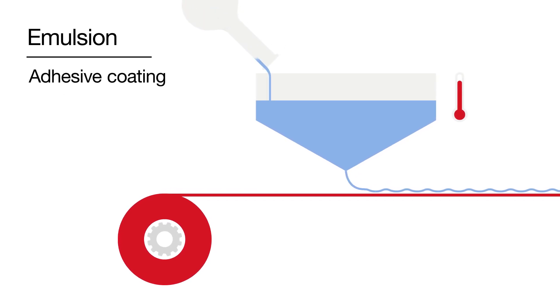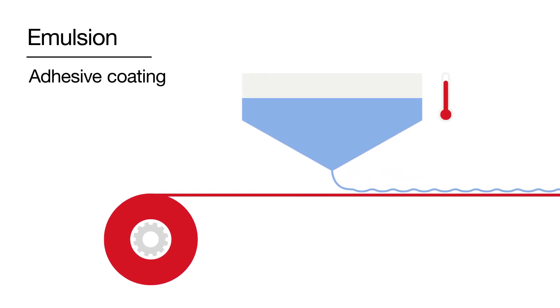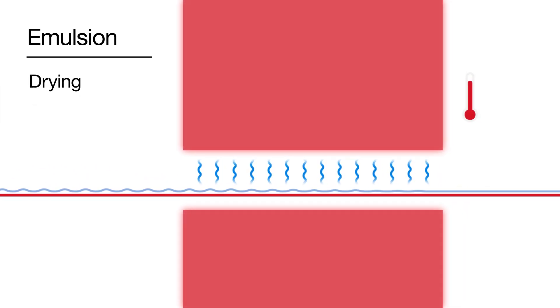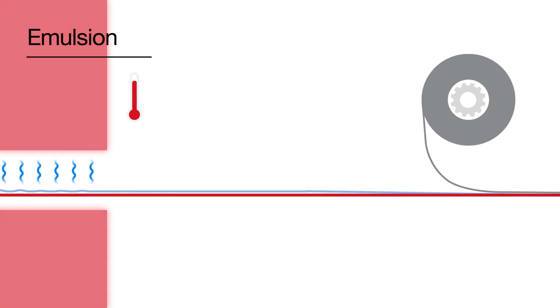During our labelling materials production process, we apply the emulsion adhesive onto a liner. Then we dry it to evaporate the water and after that we lay the label face material on top.